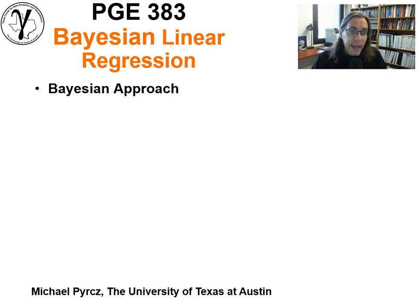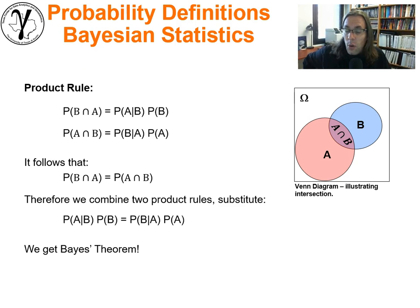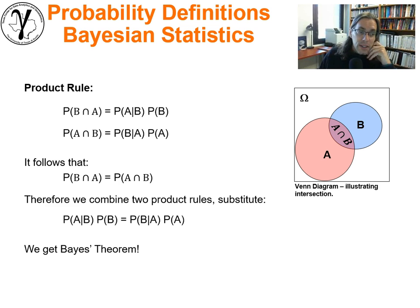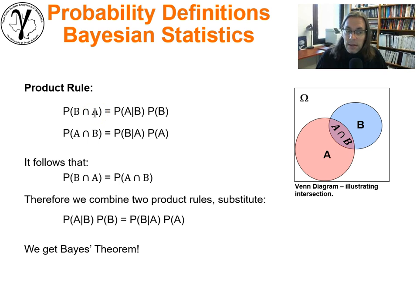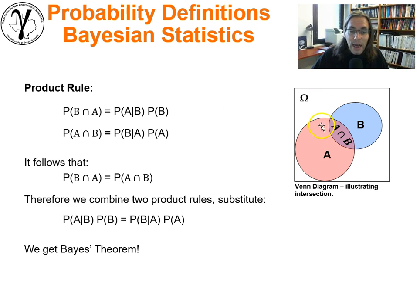Let's do a really quick recap on the Bayesian approach. There was a previous lecture on this. I also have an extended lecture within my Intro to Geostats course. We can look at the product rule. The product rule tells us that the joint probability of B intersected with A is equal to the conditional probability of A given B, times the probability of B. We could look at a Venn diagram and immediately understand that that's the case.